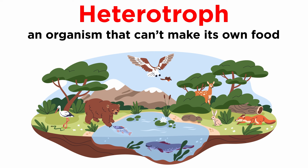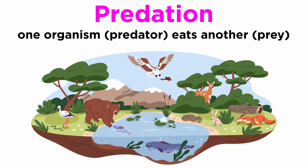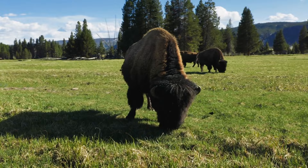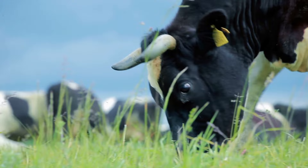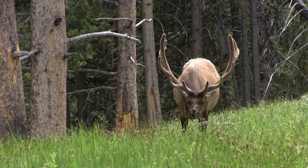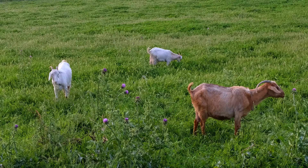Predation can be defined as an interaction in which one organism, the predator, eats all or part of the body of another organism, the prey. Herbivory is a form of predation, but the prey organism is a plant instead of an animal. With a diet comprised of only plants, herbivores can be surprisingly large animals. Examples of large herbivores include cows, elk, and buffalo. These animals eat grass, tree bark, aquatic vegetation, and shrubby growth.